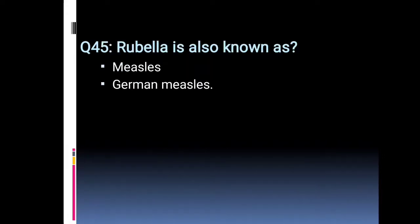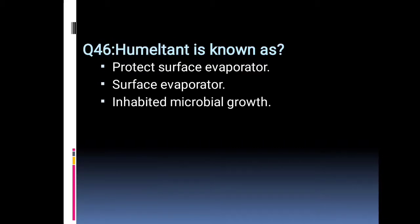Rubella is also known as measles or German measles? This is a question from pharmaceutics. Humilton is known as a protected surface evaporator — surface evaporator that inhibits microbial growth.